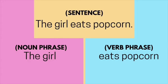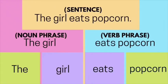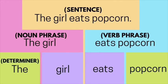It's time for us to divide the phrases. For the noun phrase, we divide 'the girl' into two: the word 'the' and 'girl.' For the verb phrase, we divide it into 'eats' and 'popcorn.'